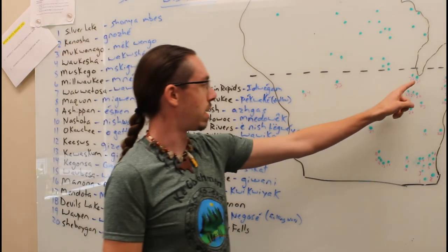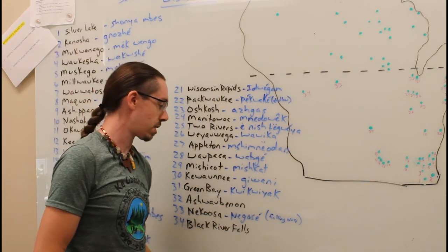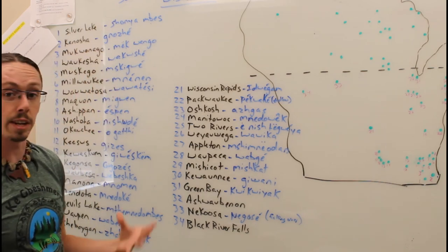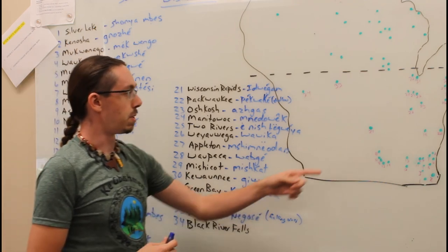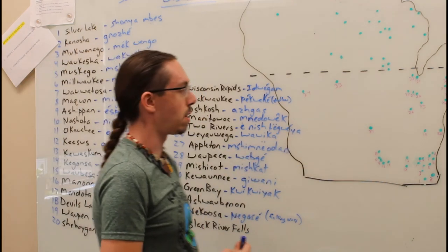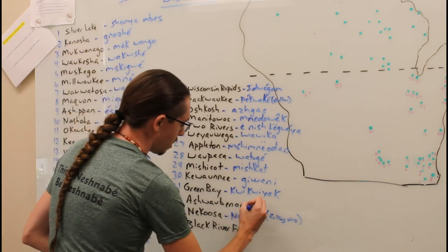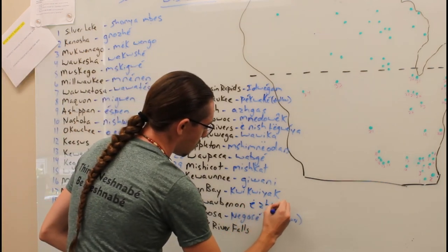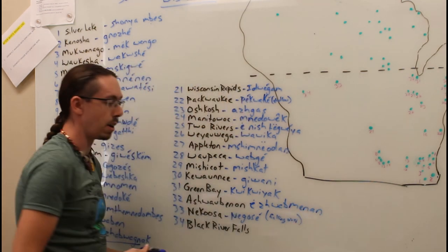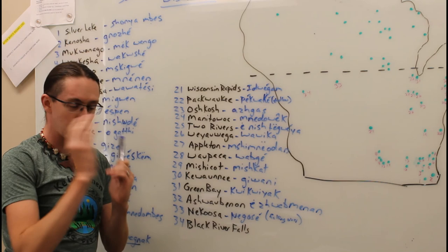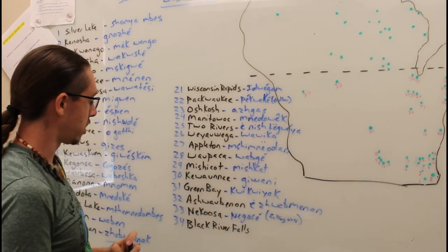Next down here, we have Green Bay. Green Bay we call Kiwaniak. Kiwaniak describes the actual bay, and that means the way in which I see you. Ejuwapanan, the way in which I see you.